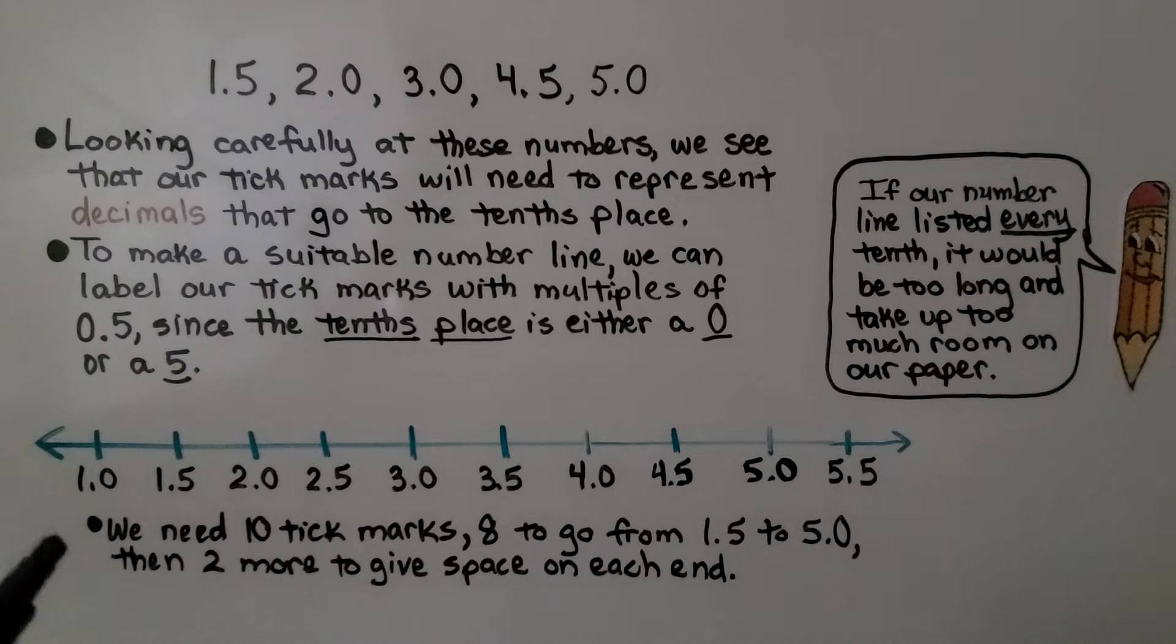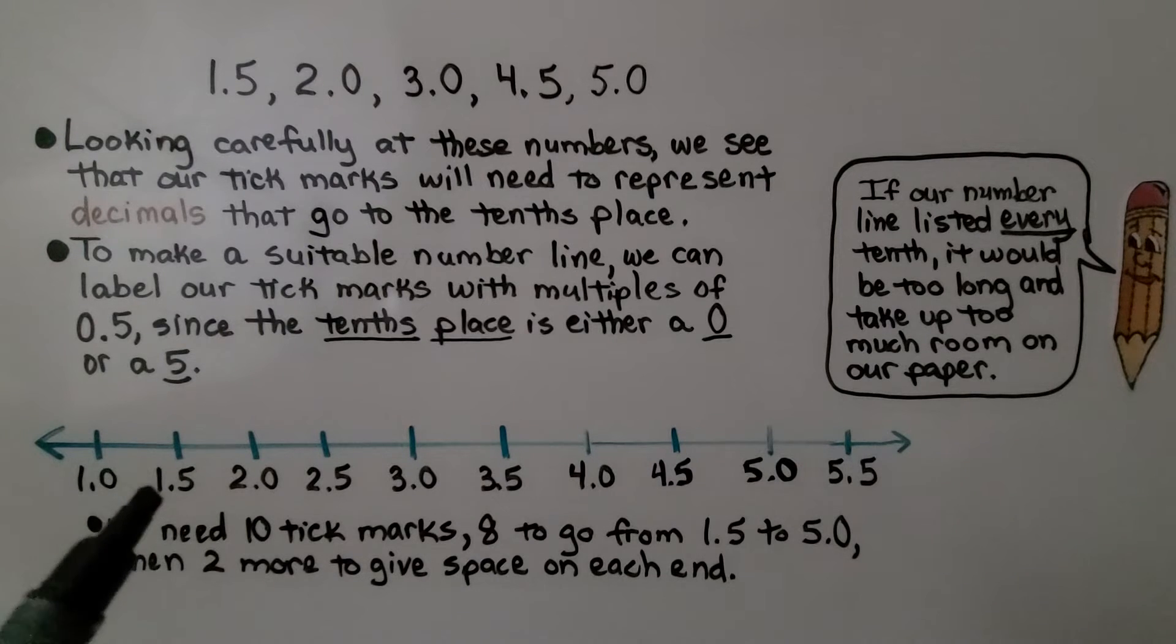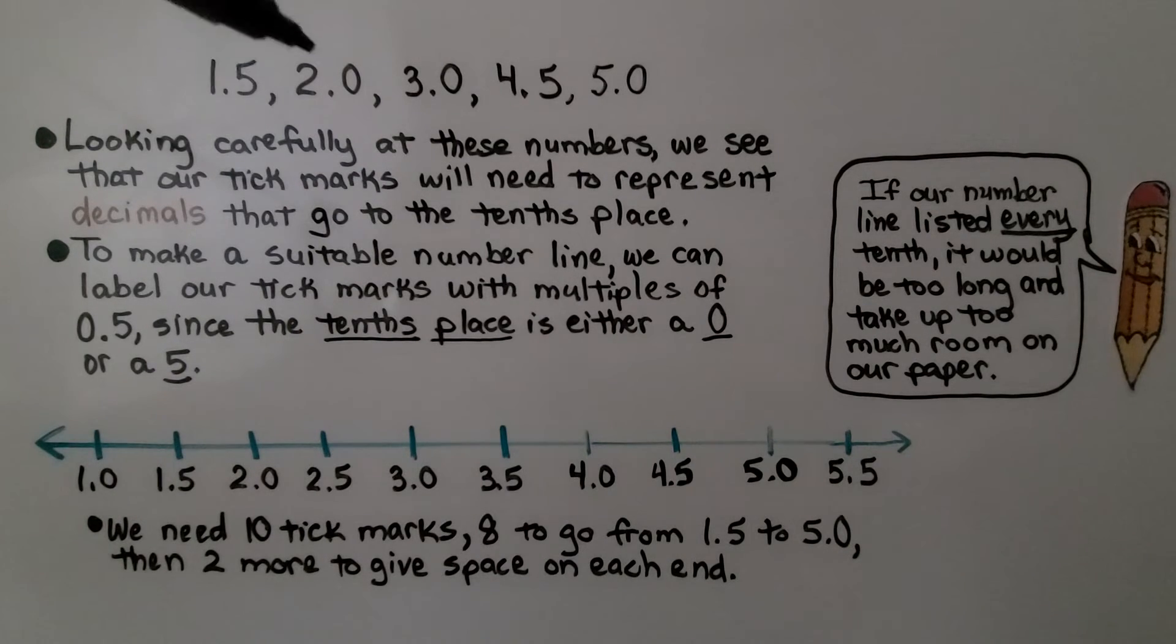We need 10 tick marks in all. We need 8 to go from 1 and 5 tenths to 5 whole. Then we need 2 more tick marks for space on each end. So even though we've got 1, 2, 3, 4, 5 given values, we need 10 tick marks on our number line.